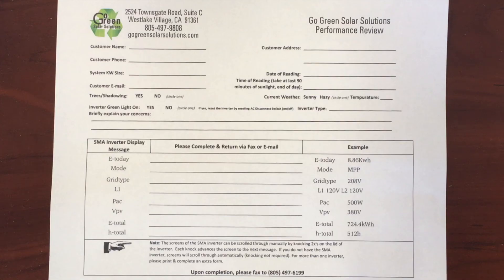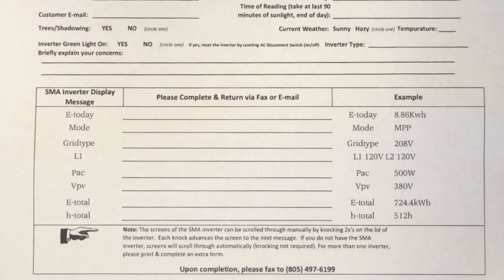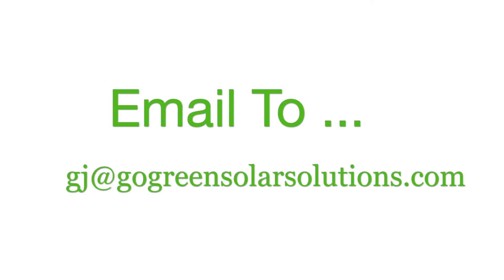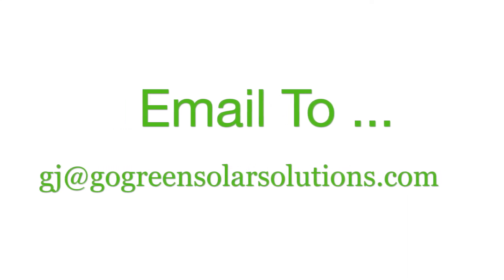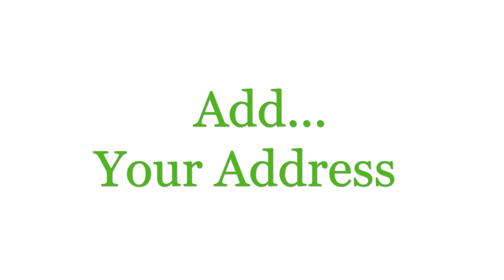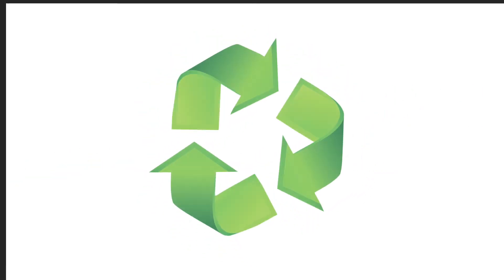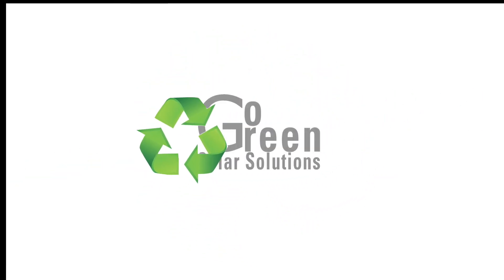If you have reviewed this information and checked your breakers and inverter display and you still have an issue, write down the values on our system performance review sheet. We can email you one — then email it back to us at gj@gogreensolarsolutions.com. Be sure to include your address. Give us a few days to review the form and we'll email you about the next step.